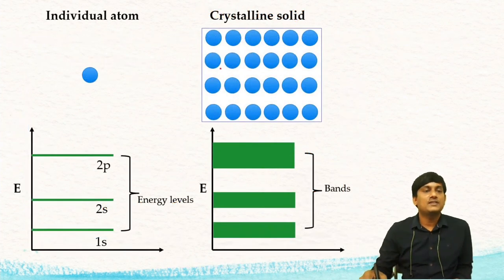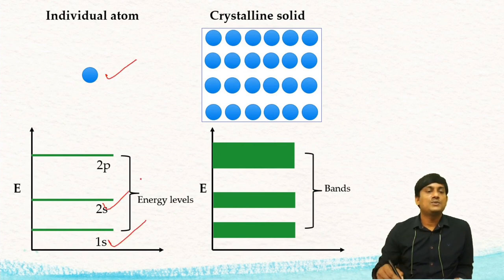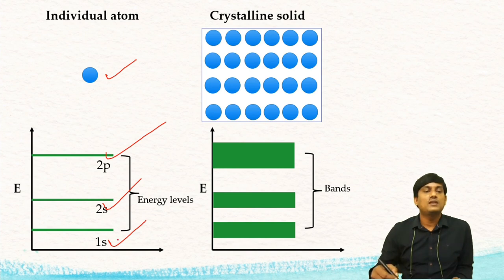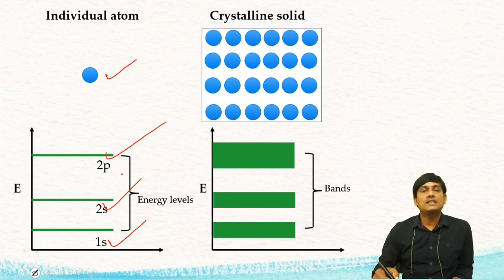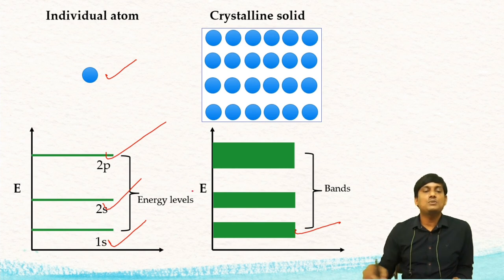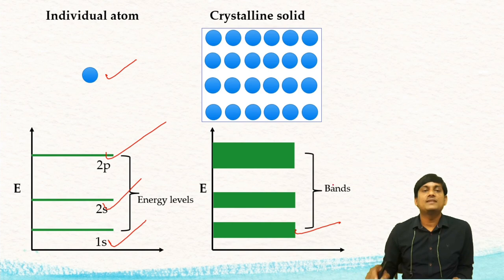If you take another atom — an individual atom which has 1s, 2s, and 2p orbitals or energy levels — in a crystalline solid you can find a very large number of these individual atoms. Then there is a linear combination among 1s orbitals, among 2s orbitals, and among 2p orbitals. You will get very closely spaced molecular orbitals formed due to linear combination of 1s, 2s, and also 2p. Then you can find a band formed due to 1s, a band formed due to 2s, and a band formed due to 2p.